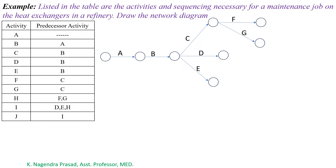Next, observe activity H. For activity H, F and G are the predecessor activities, which means after completion of F and G, activity H will start. So draw activity H. Here, observe that activities F and G are having common successor and predecessor activities for activity C and H. So draw a dummy activity at F.